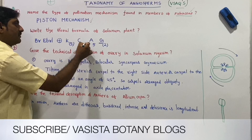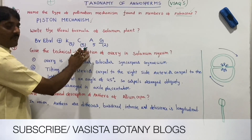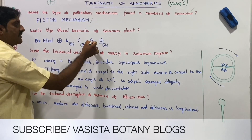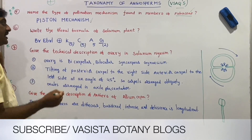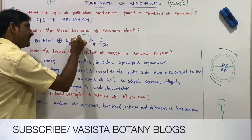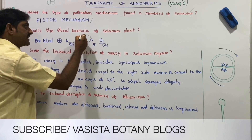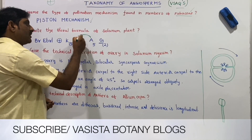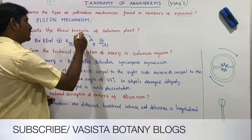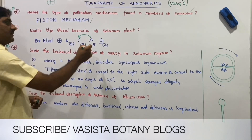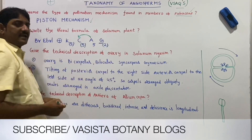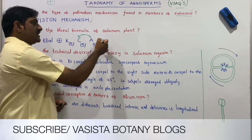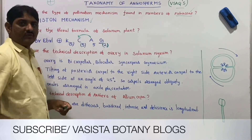Corolla also has 5 petals and is gamopetalous — petals are fused. Stamens are 5 and are attached to the petals — epipetalous condition. In the floral formula, A (androecium) is joined to C (corolla), so a wavy line mark is placed between A and C to indicate epipetalous condition. Gynoecium has two carpels — syncarpous gynoecium, carpels are fused.